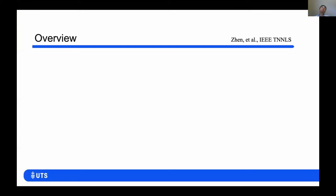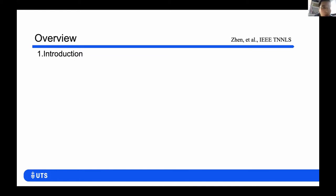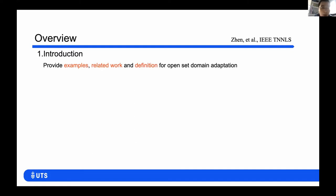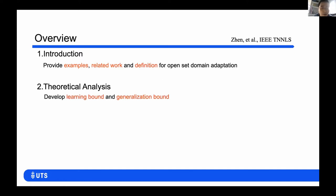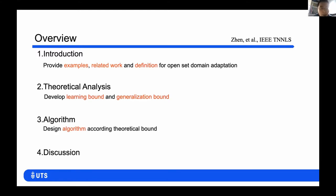First, I will give an overview of our presentation for a few minutes. Our presentation has four parts. The first part is the introduction, where I will provide examples, real-world cases, and a definition for the open-set domain adaptation problem. Then I will analyze the problem from a theoretical standpoint and develop a learning bound. Then I will design the algorithm according to our theory. Last, I will discuss the performance of our model.